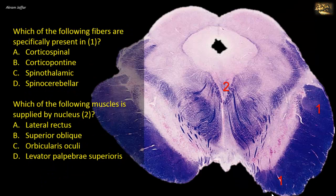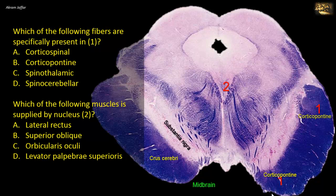Which of the following fibers are specifically present in label 1? Are they corticospinal, corticopontine, spinothalamic, or spinocerebellar? This is a section of the midbrain showing the cerebral peduncle comprising the crus cerebri and substantia nigra. The crus is a massive ventrally located fiber bundle containing corticopontine, corticobulbar, and corticospinal fibers. The corticopontine fibers occupy the medial and lateral portions of the crus, while corticospinal fibers occupy the middle region. Label 1 is located at the medial and lateral ends of the crus, so it represents corticopontine fibers.